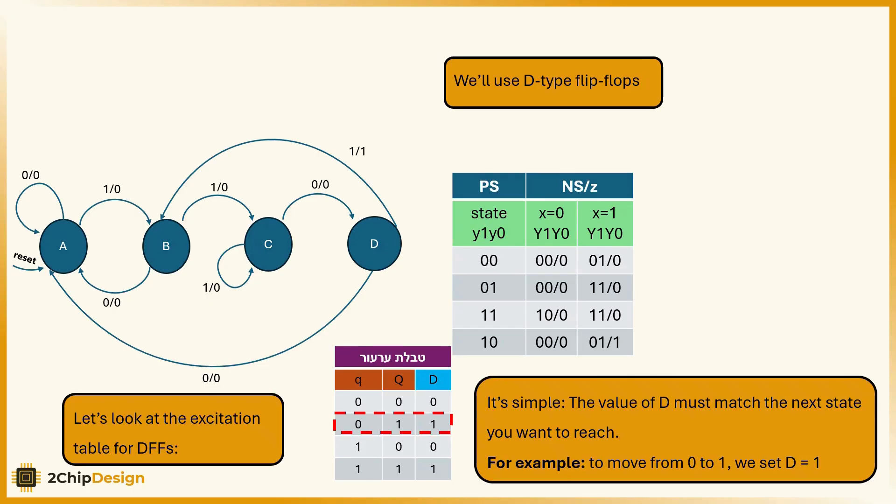Let's look at the excitation table for D flip-flops. It's simple. The value of D must match the next state you want to reach. For example, to move from 0 to 1, we set D to 1.